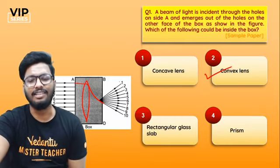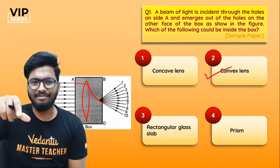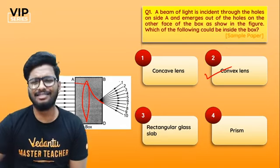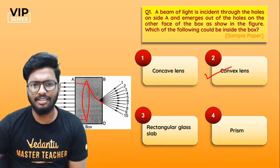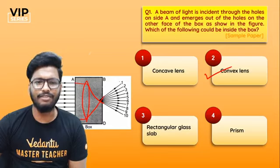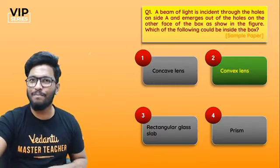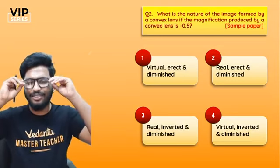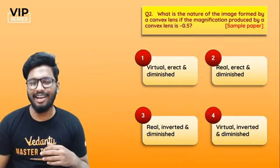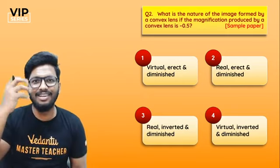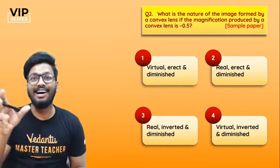I hope you found that question interesting, because I found it a little challenging the first time I read it — it was a little difficult to understand the question. The answer is easy, but it was difficult to understand. Convex lens would be the answer — a ray of light would come incident and would basically get refracted and pass through like that.